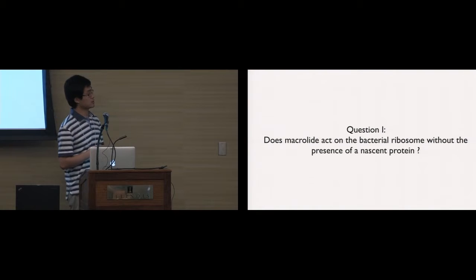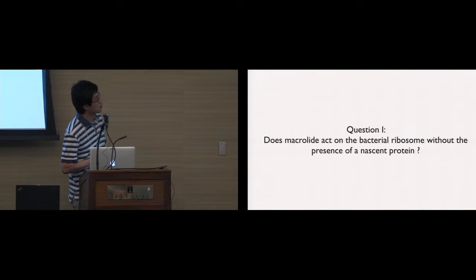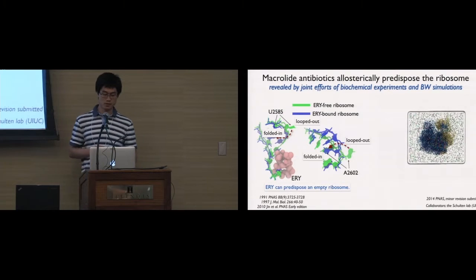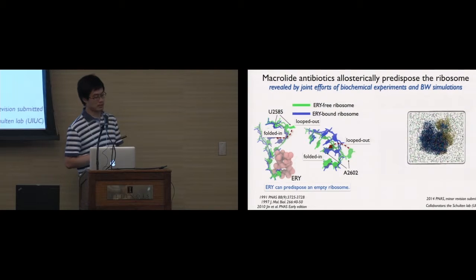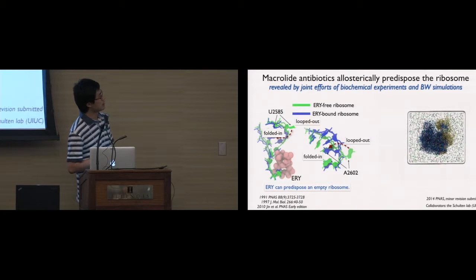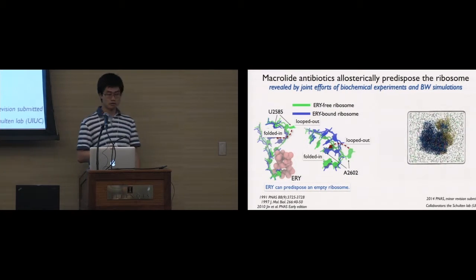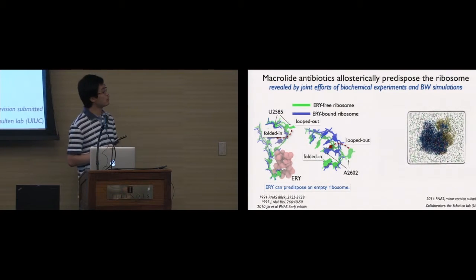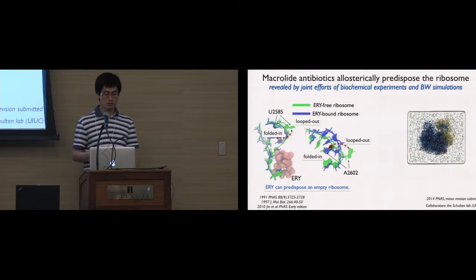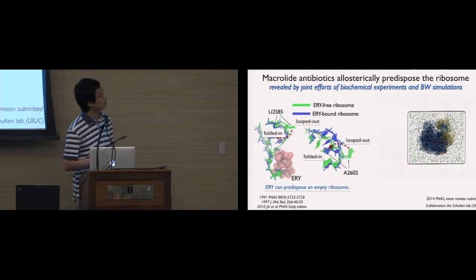So the first question we want to ask is: does macrolide act on the bacterial ribosome directly without the presence of a nascent protein? The answer is yes. This was first discovered by the Mankin lab in the Chicago campus. We tested an empty ribosome system — empty ribosome means a ribosome without nascent protein in the exit tunnel. We found that when the drug is bound to the ribosome, a very critical nucleotide on ribosome, U2585, changed conformation. However, due to the resolution limitations of the biochemical study, we don't know what kind of conformational change occurred at this nucleotide.